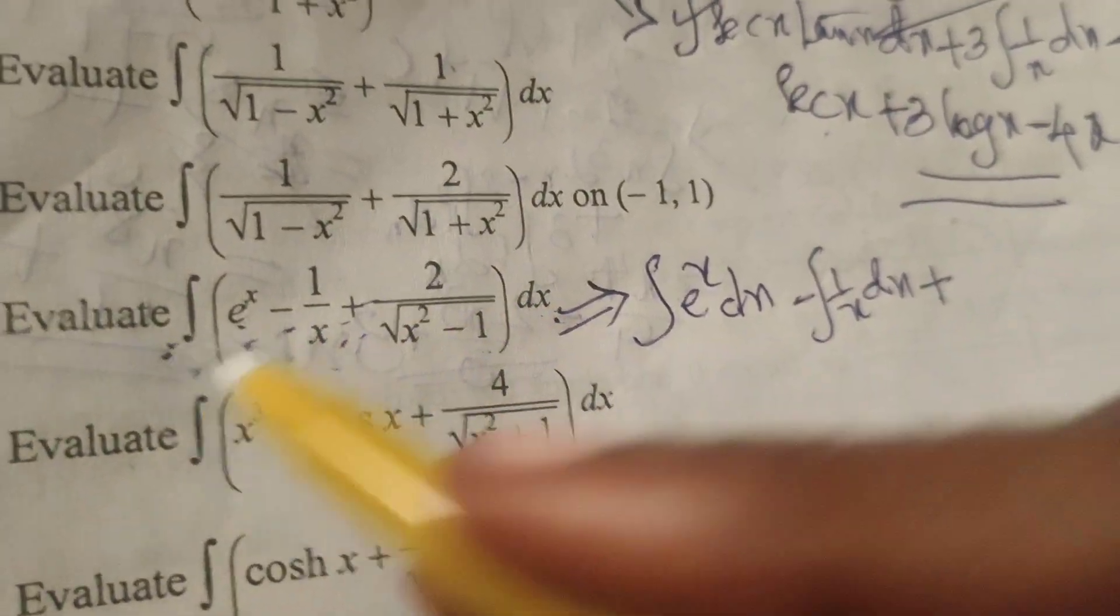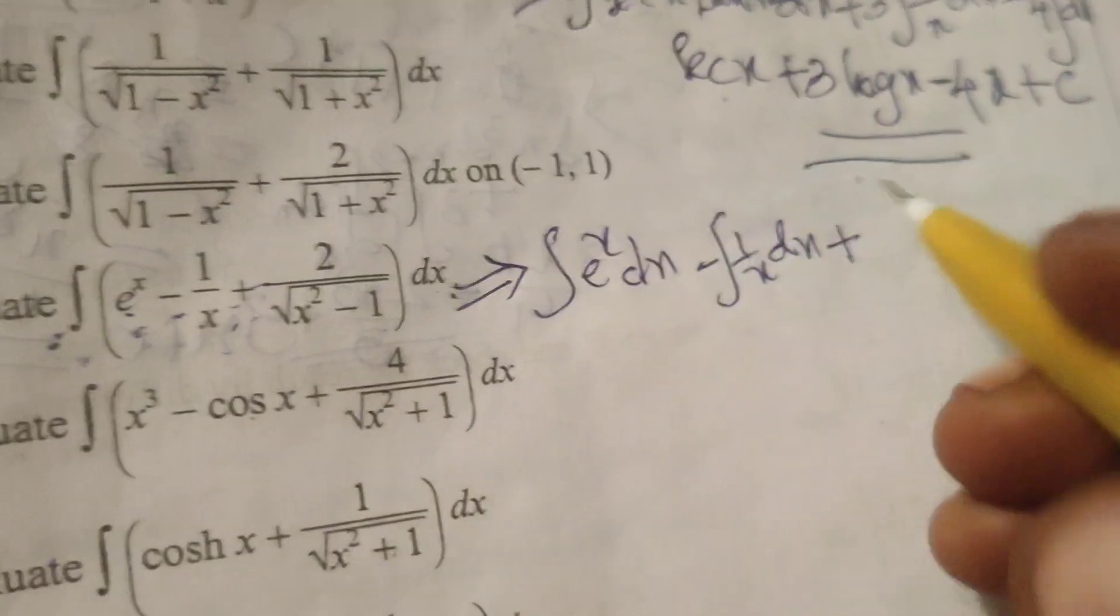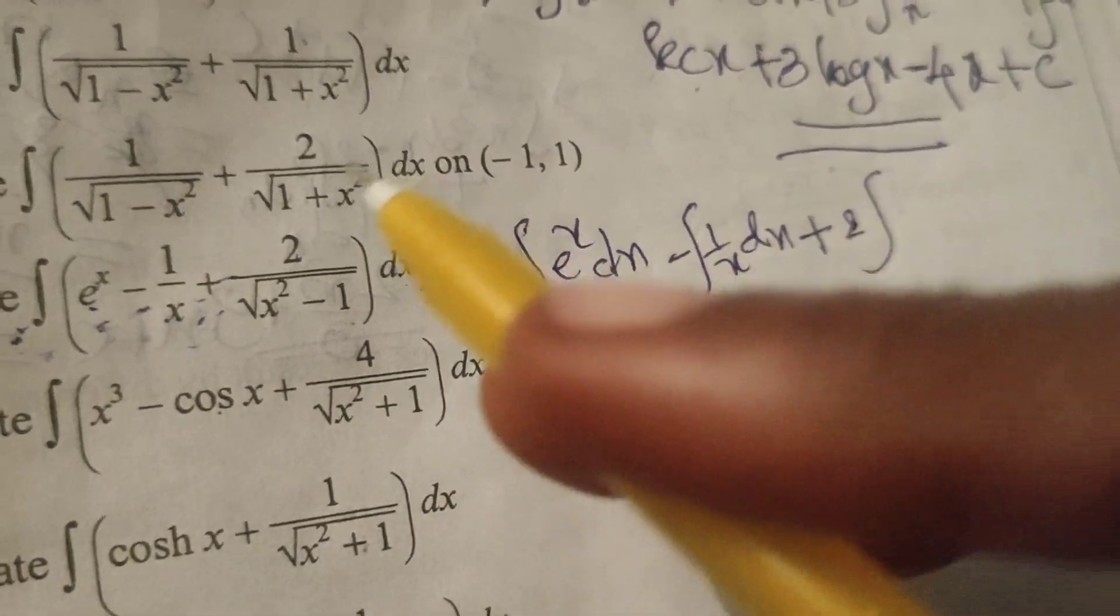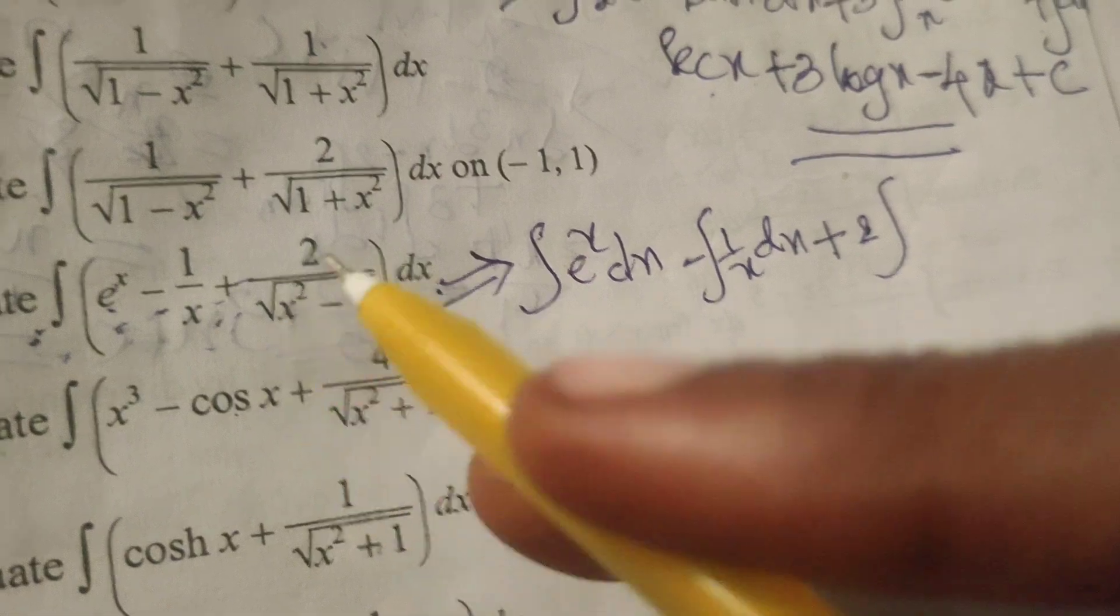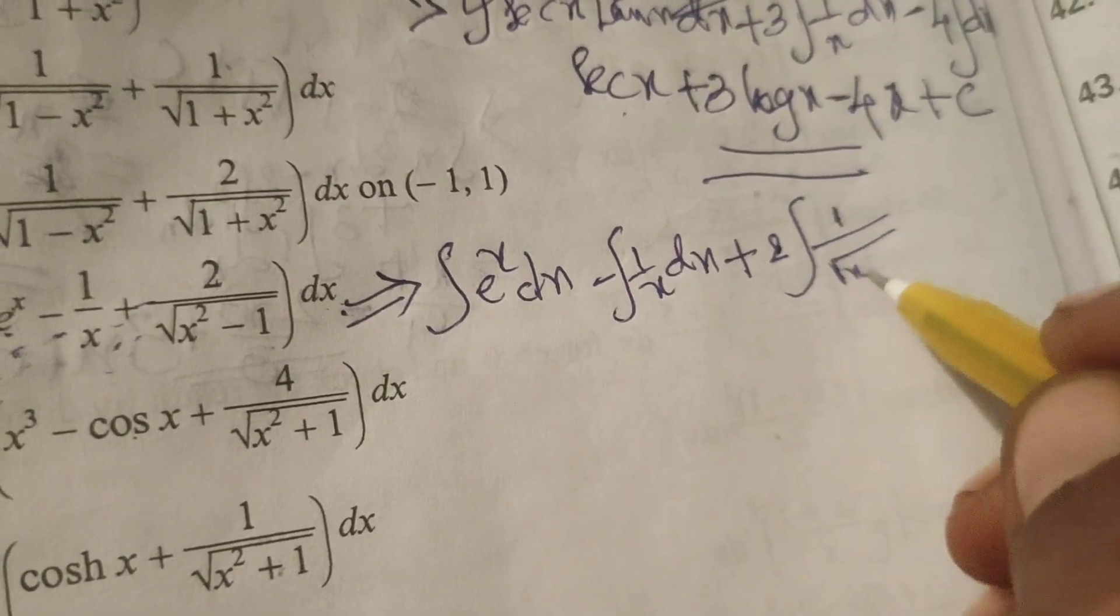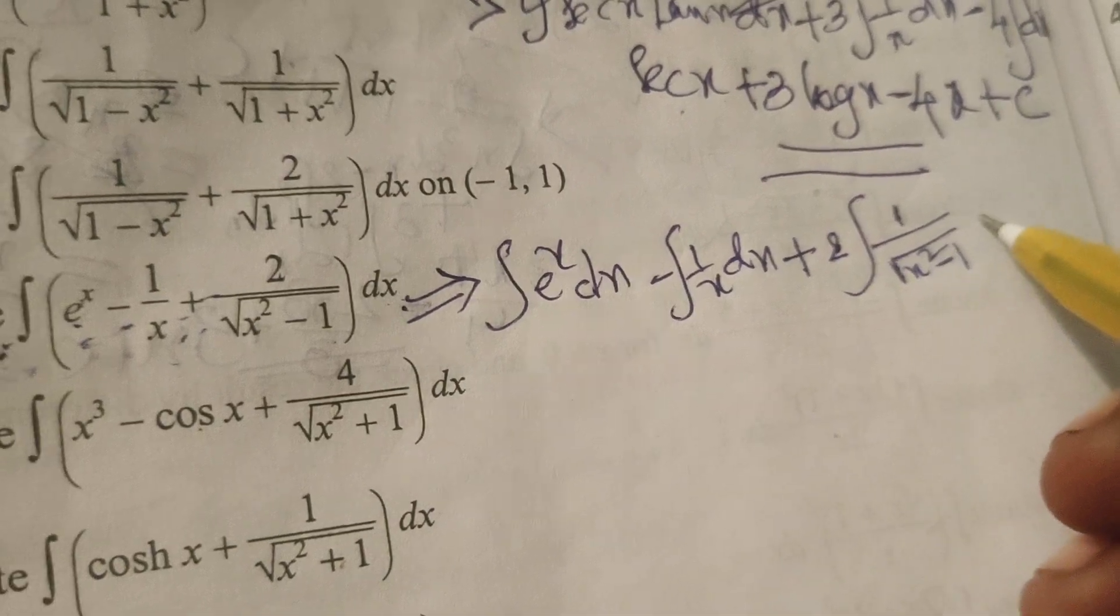Integral multiplied in this term. So 2 is the constant right before the integral. Now integrate 1 by root of x squared minus 1 dx.